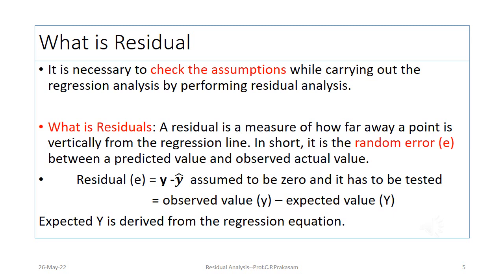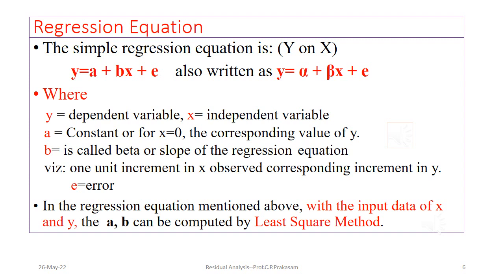The residual, referred to as small e, equals y minus y-cap. It is assumed to be 0, and it has to be tested. It is the observed value y minus the expected value y-cap, where y-cap is derived from the regression equation. The simple regression equation y on x is: y equals a plus bx plus e, also written as y equals alpha plus beta x plus e. Here y is the dependent variable, x is the independent variable, a is a constant (the value of y when x equals 0), and b is the slope or beta of the regression equation — meaning for one unit increment in x, the corresponding increment in y. And e is the error term, which has not been explained by x.